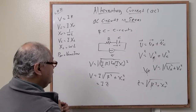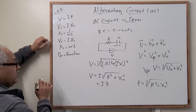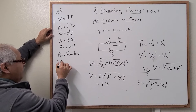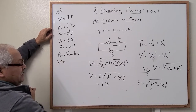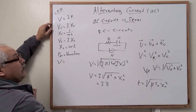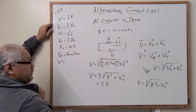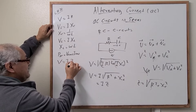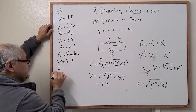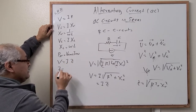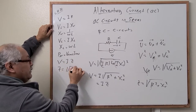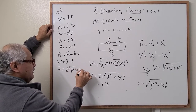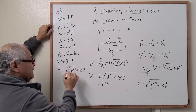Comparing this to Ohm's law, which says voltage equals current times resistance, we define a new quantity Z called the impedance, where Z equals the square root of R squared plus X_C squared. So the source voltage equals current times impedance Z, where Z is the impedance.